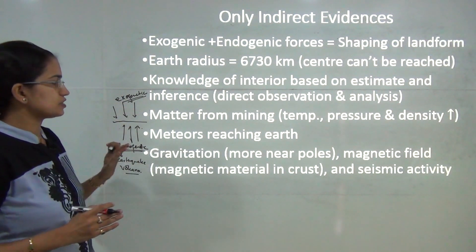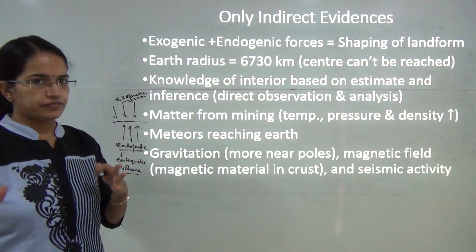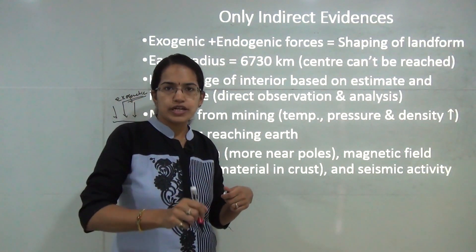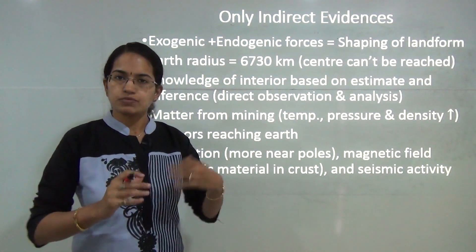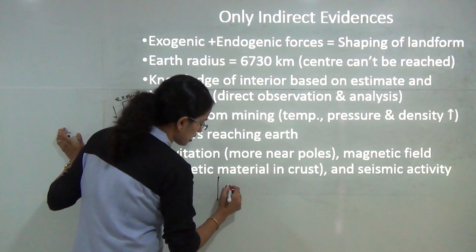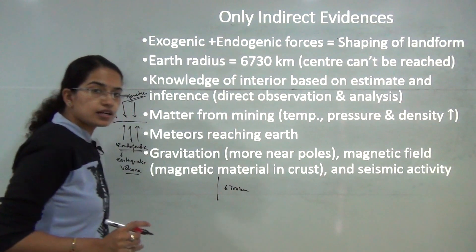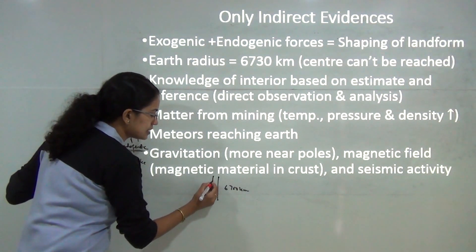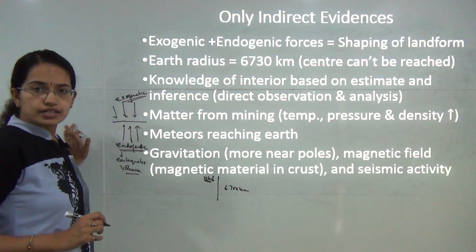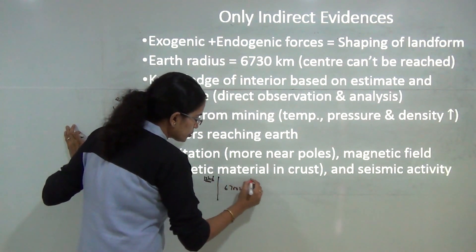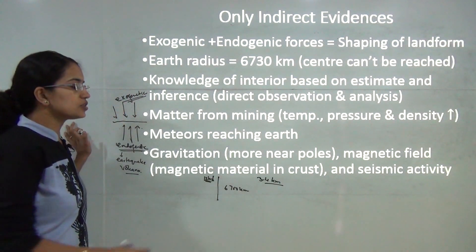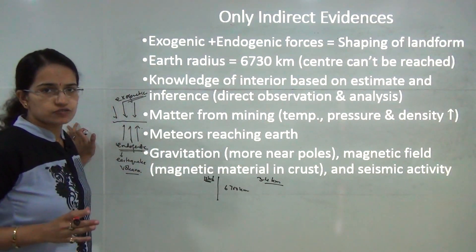Whatever knowledge we have about the earth's interior is based on two types of evidences. Direct evidence includes drilling a hole into the earth to identify what types of rocks are present. The radius of the earth is nearly 6,700 kilometers, but humans have only discovered a maximum depth of up to 12 kilometers at the Cola borehole in the Arctic Circle. Most mining activities are at a depth of only 3 to 4 kilometers.